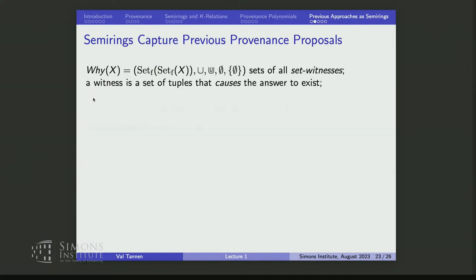Then there was a really influential paper that introduced why-provenance. In why-provenance, the provenance can be thought of as a set of sets of tuple IDs. The sets inside were called witnesses — each was a witness for one of the reasons why you would derive the tuple, and hence the name why-provenance.